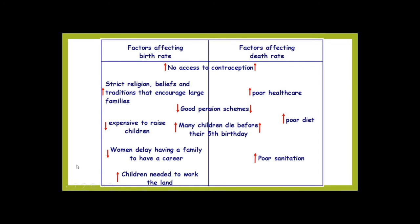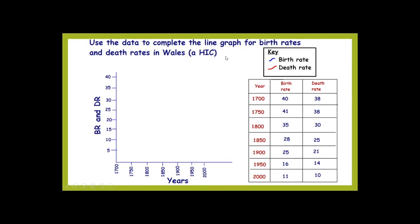Now we're going to apply this understanding to a set of data. Use the data to complete a line graph of birth rates and death rates in Wales, an HIC. You do not need to copy out the table of data — just use it straight from the slide. If you have graph paper at home, great; if not, this is a fairly straightforward line graph and you can use the lines in your book. Use two different colours — one to join up your plots for birth rate and one for death rate. Remember your graph skills: it needs a title, both axes labelled, both axes evenly spaced, and ideally drawn in pencil. Pause the video and go ahead and construct that in your books, please.